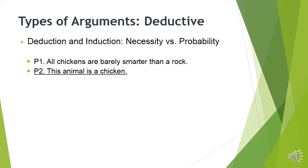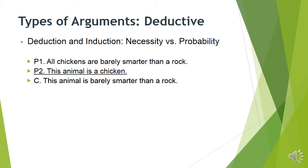Some examples of deductive arguments: all chickens are barely smarter than a rock; this animal is a chicken; therefore, this animal is barely smarter than a rock. If you accept the premises, you have to accept the conclusion. Now, you could say that premise one is false, and that might be a reason to reject the conclusion. But if premise one and two are true, there's no way the conclusion can be false. It's a deductive argument going for guarantee, and it succeeds if the premises are true.